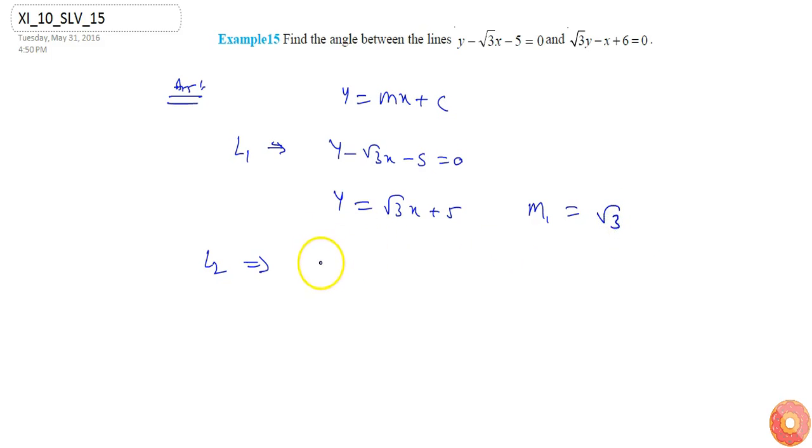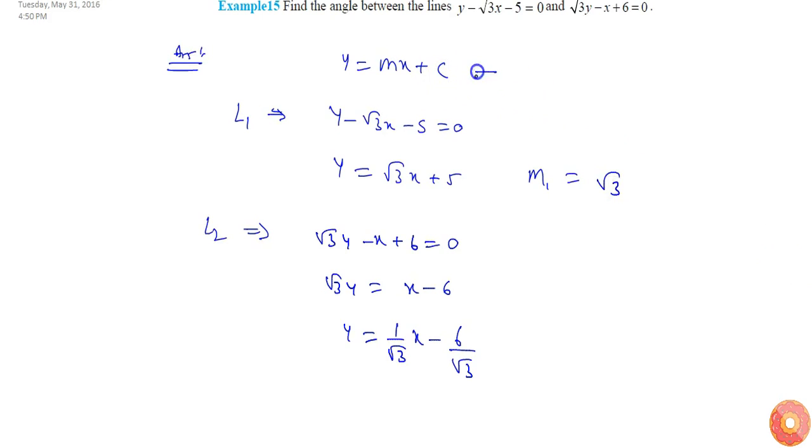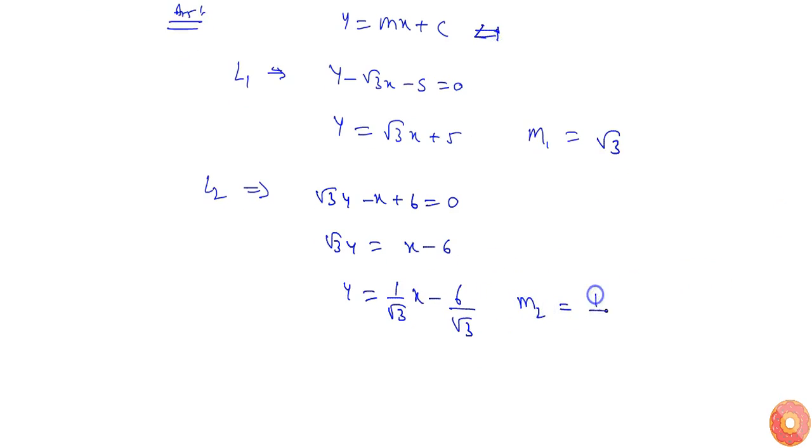And L2 is root 3 y minus x plus 6 equals 0, or I can say root 3 y equals x minus 6, y equals 1 by root 3 x minus 6 by root 3. If I compare with the standard equation, I will get m2 equals 1 by root 3.